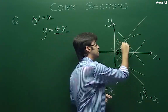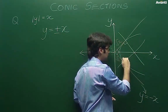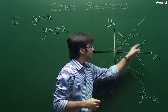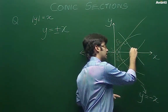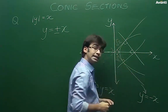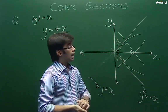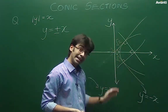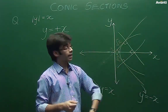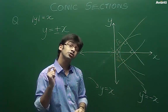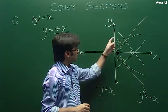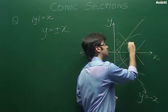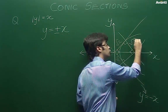तो इन दोनों के बीच में हमें 90 degrees मिल जाएगा। Radius और tangent के बीच में यहाँ पे भी 90 degrees होगा, और यहाँ पे भी 90 degrees होगा। तो symmetry से आप कह सकते हैं कि इस पूरे figure में जो बचा हुआ angle है quadrilateral का, वो भी 90 degrees होगा। Adjacent sides यहाँ पे equal हैं और चारों angles 90 degrees हैं — ये तब ही हो सकता है अगर ये पूरा figure एक square हो। और अगर adjacent sides equal हैं और ये square है, तो सारे sides की length हो जाएगी root 2 units।